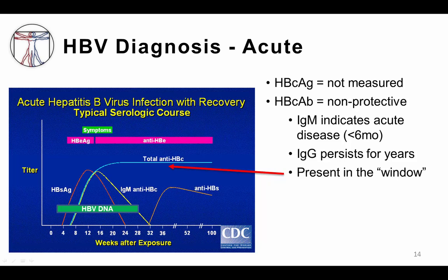During the window period, other serum markers such as hepatitis B DNA, surface antigen, E antigen, and surface antibody have all either disappeared or are not yet found in the blood. The anti-hepatitis B core antibody persists often for life, but after about six months of infection, the total anti-hepatitis B core antibody mainly consists of IgG instead of IgM. For patients with resolved infection, the IgM anti-HBc antibody is not usually detectable after about six months. With chronic hepatitis B infection, the IgM core antibody may remain detectable at very low levels, even for years after infection.